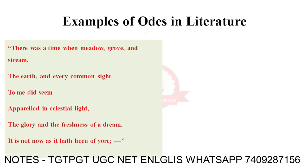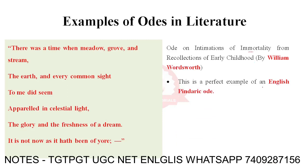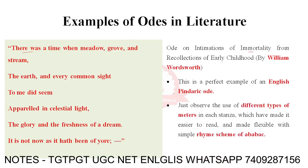Now let's go through some examples of odes in English literature. First, Ode on Intimations of Immortality from Recollections of Early Childhood by William Wordsworth. This is a perfect example of an English Pindaric ode. For example: 'There was a time when meadow, grove, and stream, the earth and every common sight to me did seem appareled in celestial light, the glory and the freshness of a dream. It is not now as it hath been of yore.' You can observe the use of different types of meters, with a flexible rhyme scheme of ABABAC.